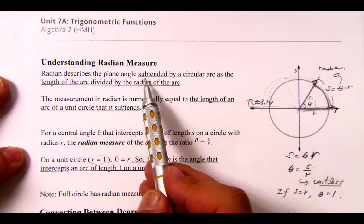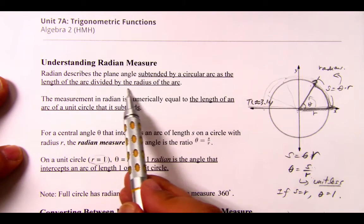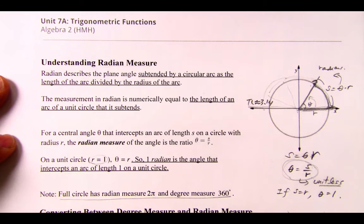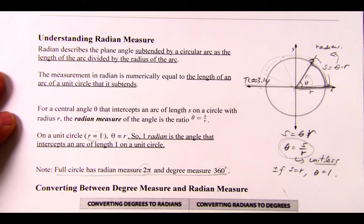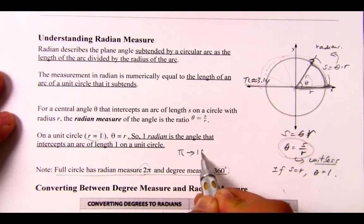So when it says radian describes an angle subtended by a circular arc as the length of the arc divided by the radius of the arc, it's describing this relationship right here. And one thing that you should remember right here is that full circle for radian is 2π, and the degree measure is 360. From this, we're going to figure out the relationship between the radian and degree conversion.